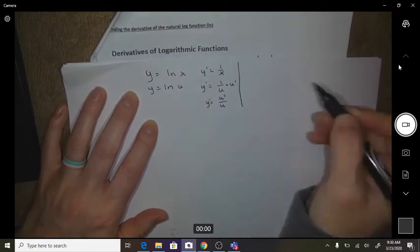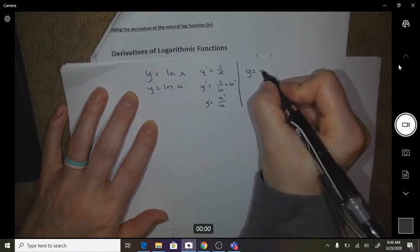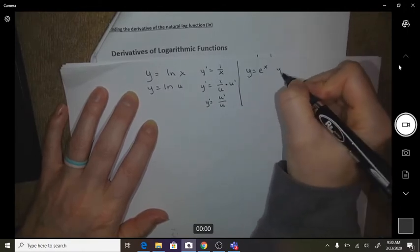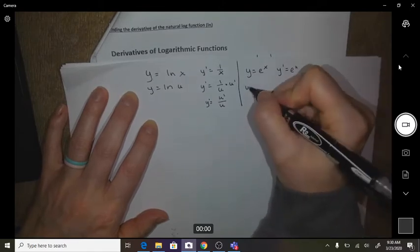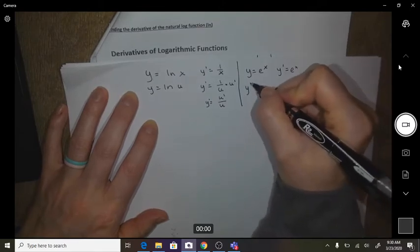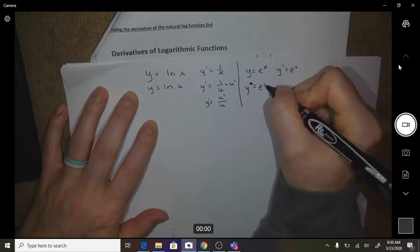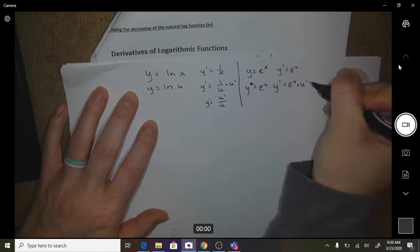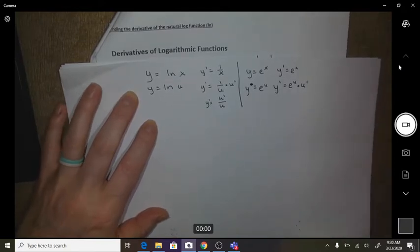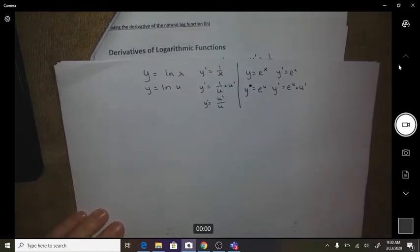Okay, if you have a function that's e to the x, then your derivative is the same. And if we do a chain rule, if you have something more than x there, then your derivative is e to the u, and then you'll have to times it by the derivative of u.